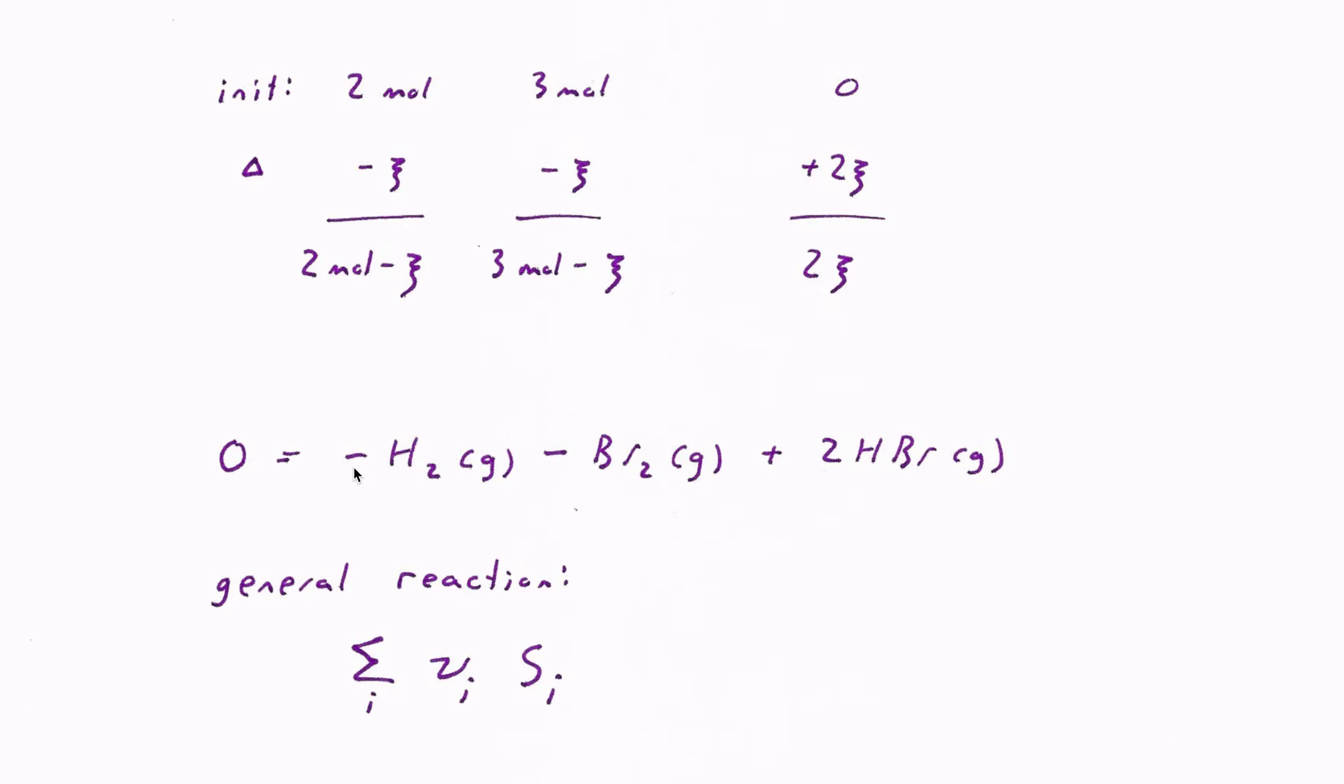So for example, in H2Br2, negative one is the stoichiometric coefficient for H2, negative one is the stoichiometric coefficient for Br2, and plus two is the stoichiometric coefficient for HBr. And then the species are these quantities H2 and Br2 and HBr. So if I just write the sums of coefficients times species, those things sum to zero.